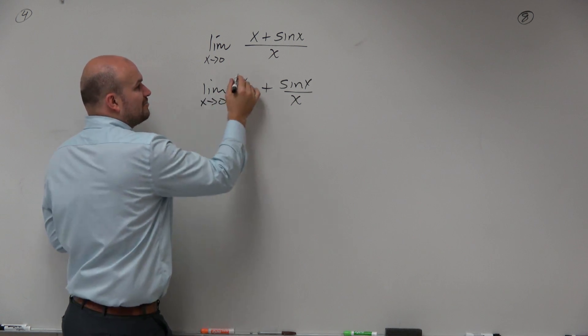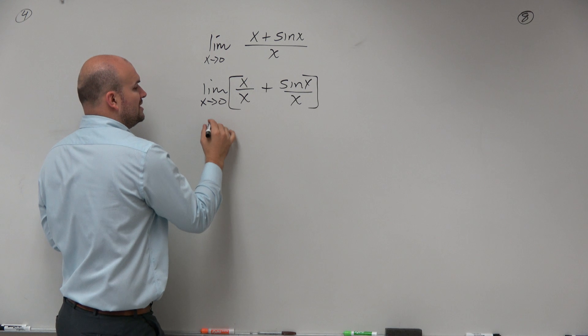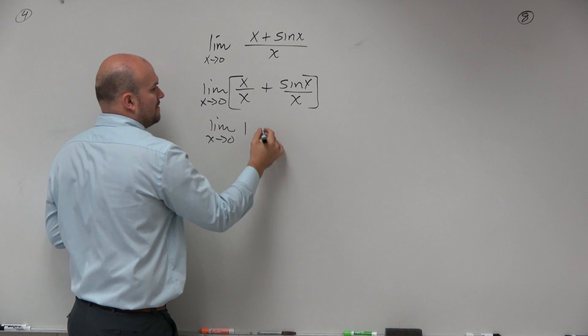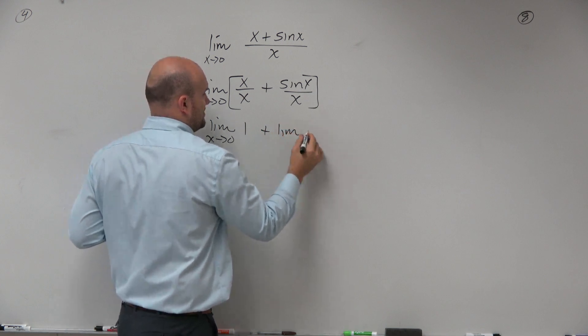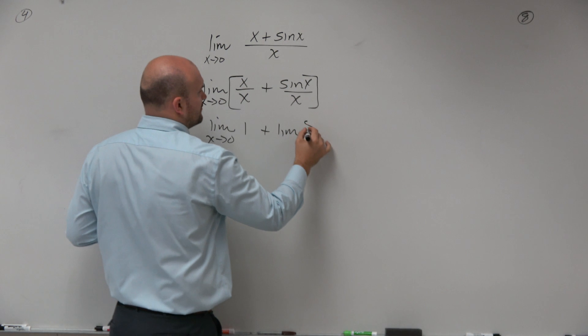Please remember, guys, you can break apart the limit to take the limit of each of these separately. So limit as x approaches 0 of x over x, which is just 1, plus the limit as sine of x over x.